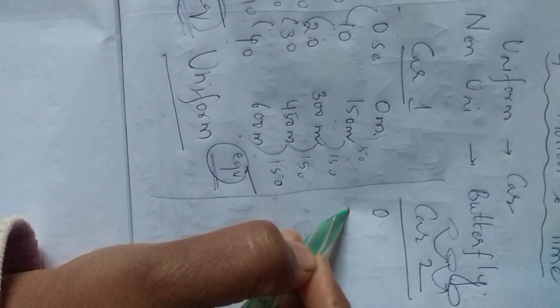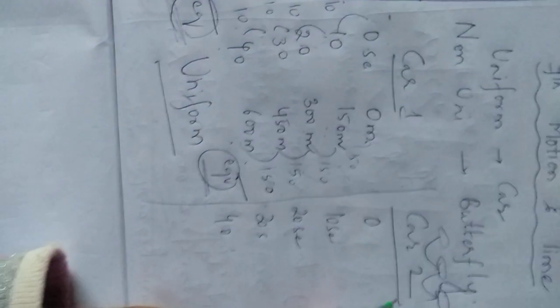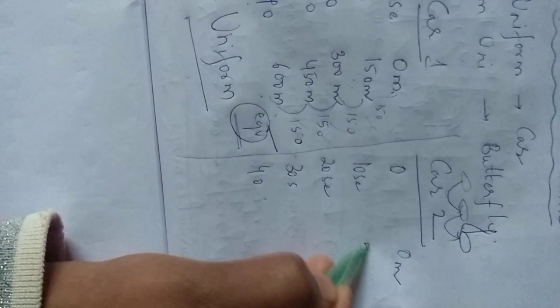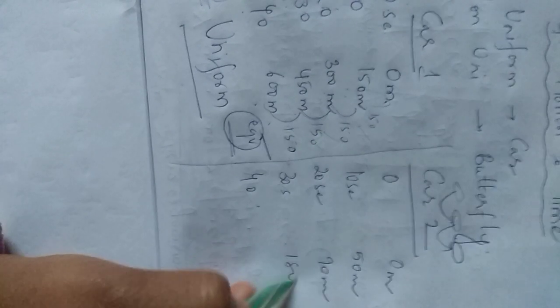And car 2 we will see. Same time: 0 seconds, 10 seconds, 20 seconds, 30 seconds, and 40 seconds. So first 0 seconds means 0 metres, next 50 metres, 90 metres, 180 metres.